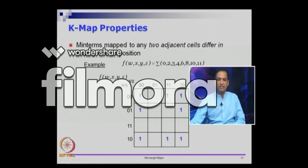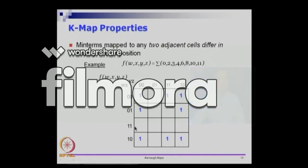All those cells are 0. Among 8, 9, 10, 11 we see 8, 10, and 11 are 1; 9 is 0. You can notice that even among the rows we have the order 00, 01, 11, 10. The reason for this ordering is that adjacent cells should differ in exactly one bit position — if you look at any two adjacent cells, only w is changing while x, y, and z retain the same values.